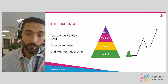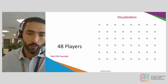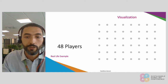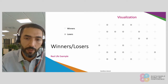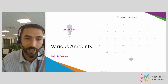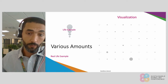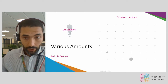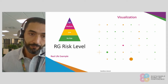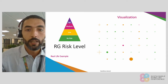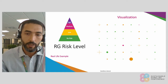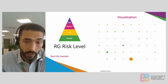To give it a better perspective, let's look at an example. Consider 48 players, all represented by 48 gray dots on the right. To visualize it better, we will identify the winners and the losers and change the size according to the amount lost or won by the player. And to this population, we apply our internal Kindred RG risk level with a color coding, from green to purple. This highlights that you don't see a clear correlation between the losses or the winnings and the RG risk level.